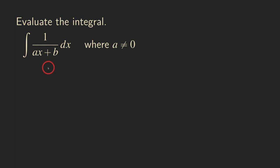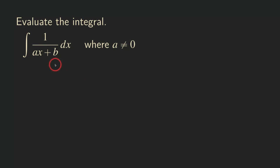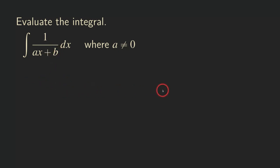Usually when people see this, they will say let's do a u-substitution, letting u be ax plus b. While that works, it's unnecessary, because we can simply look at the derivative of some function that gives us this integrand, and then make adjustments to reverse the chain rule. That will be a lot easier to do.